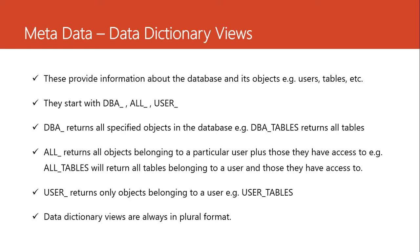Let us start with the data dictionary views. They are stored in a tablespace we call SYSTEM. What the data dictionary views do is provide us information about the database and its objects — when we talk about database objects we mean users, tables, etc. These data dictionary views start with something like DBA_, ALL_, or USER_, and they are always in plural form. The underscore is followed by the object we are interested in — for example, we can say DBA_TABLES or DBA_USERS.